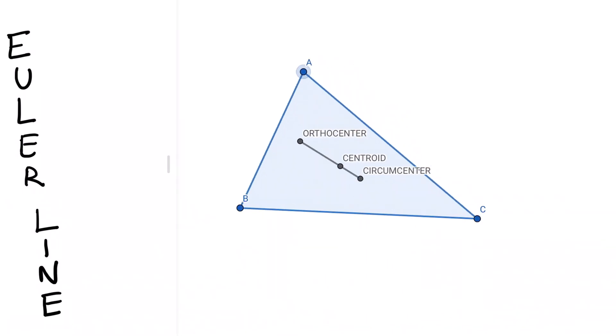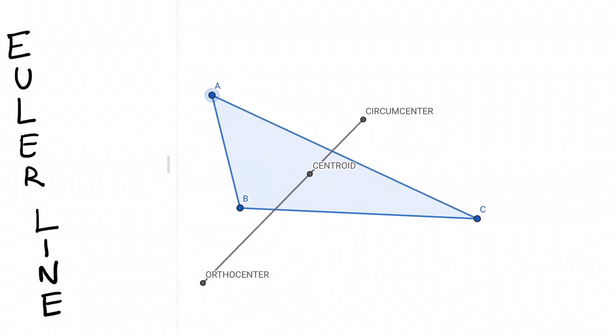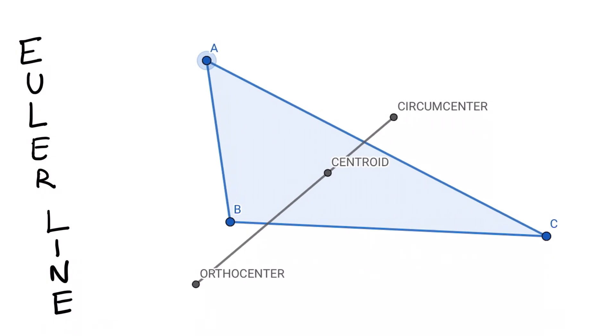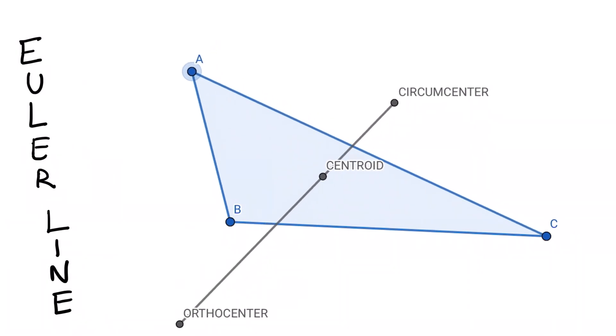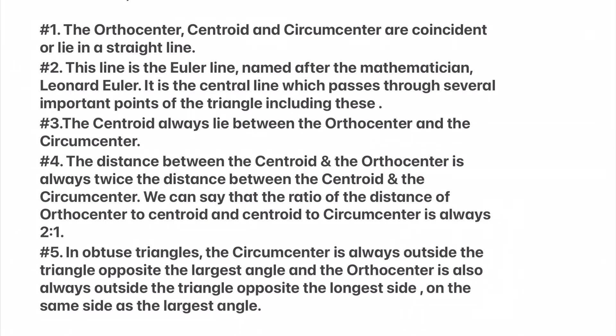If we have an obtuse angled triangle, we see that the circumcenter is always outside the triangle, opposite to the largest angle. The orthocenter is also always outside the triangle, opposite to the longest side, or on the same side as the largest angle.